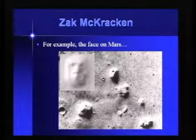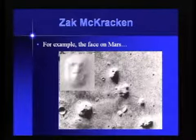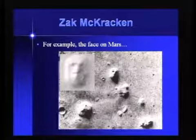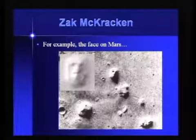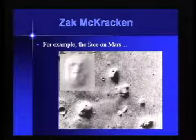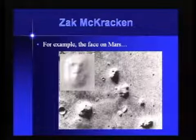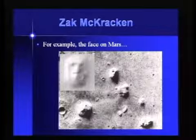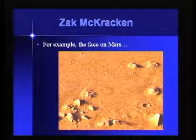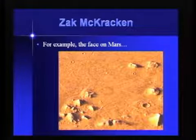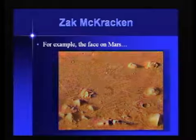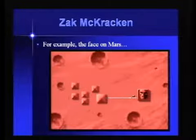On July 25th, 1976, Viking Orbiter 1 was acquiring images of the Cydonia region of Mars as part of the search for potential landing sites for Viking 2, and they took this photo. You can see it looks kind of like a face. So we decided it was a face — there's a whole part of the game which features a face and pyramids. We decided there's an ancient civilization on Mars, and that's a whole part of the game. This is the game art based on that.